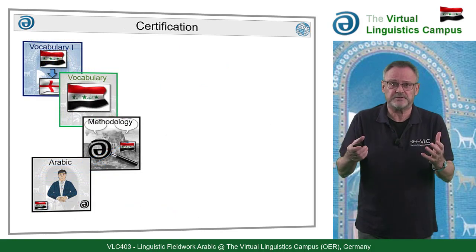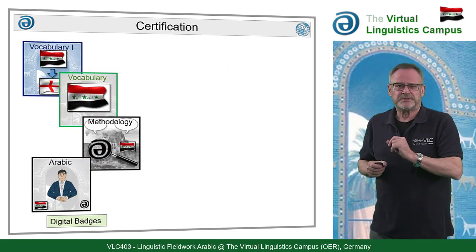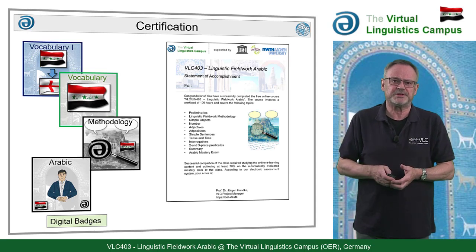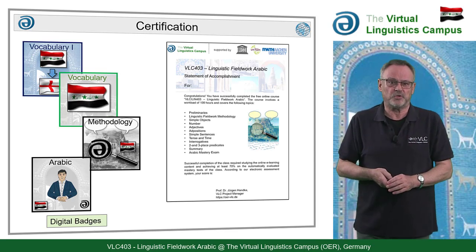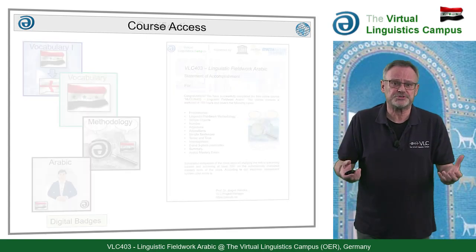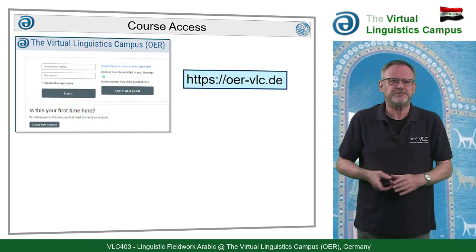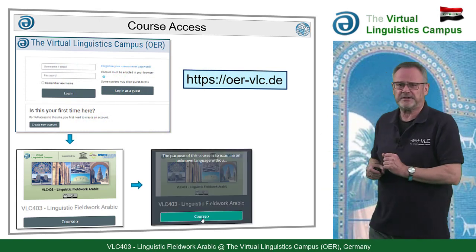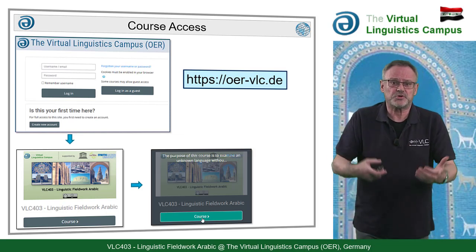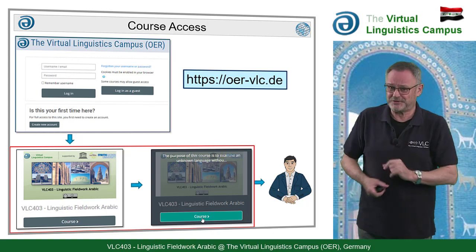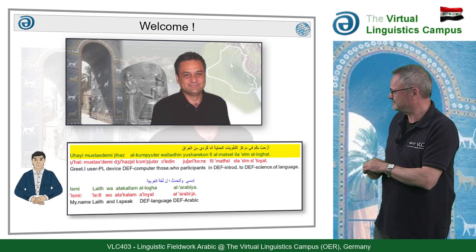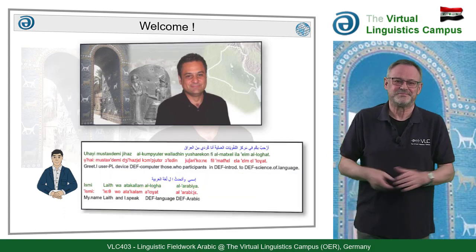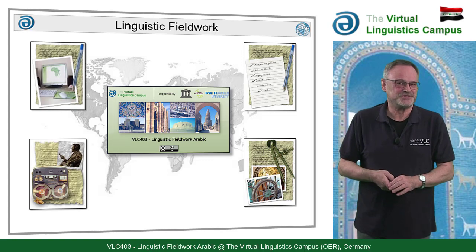The course is certified. Beyond the digital badges that you can obtain via the mastery tests, each fieldwork class is certified with a statement of accomplishment that lists the content and specifies the workload in hours. And as usual, course enrollment is simple. You only have to create your free VLC account first and then self-enroll to your fieldwork class by clicking on the course tile. That's it. And in the course, you will be welcomed by the real native speaker. See you in VLC 403 Arabic.